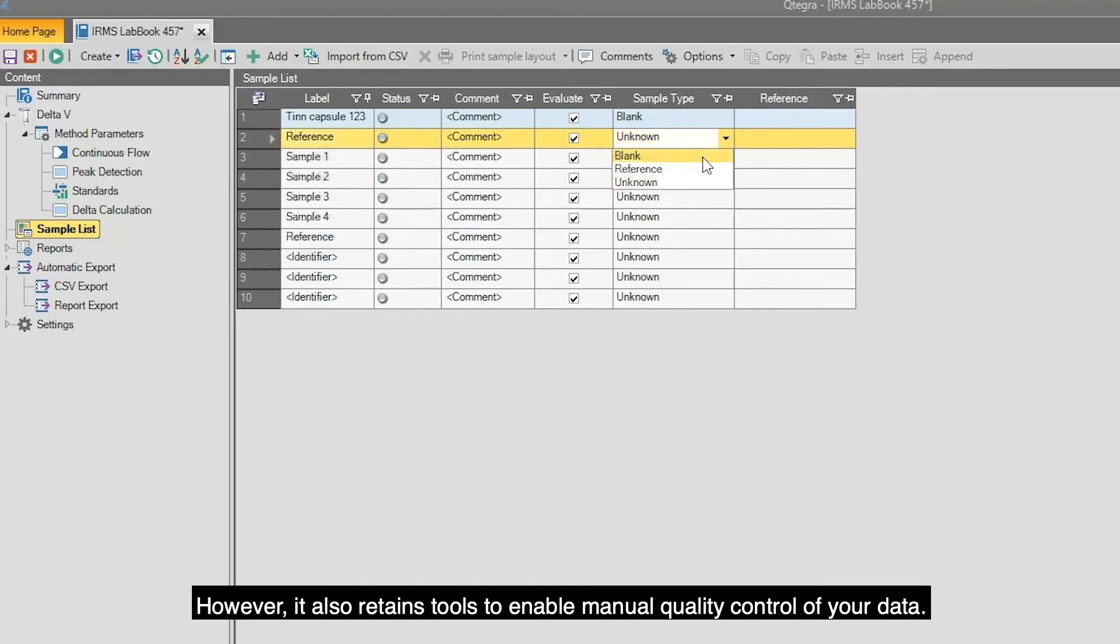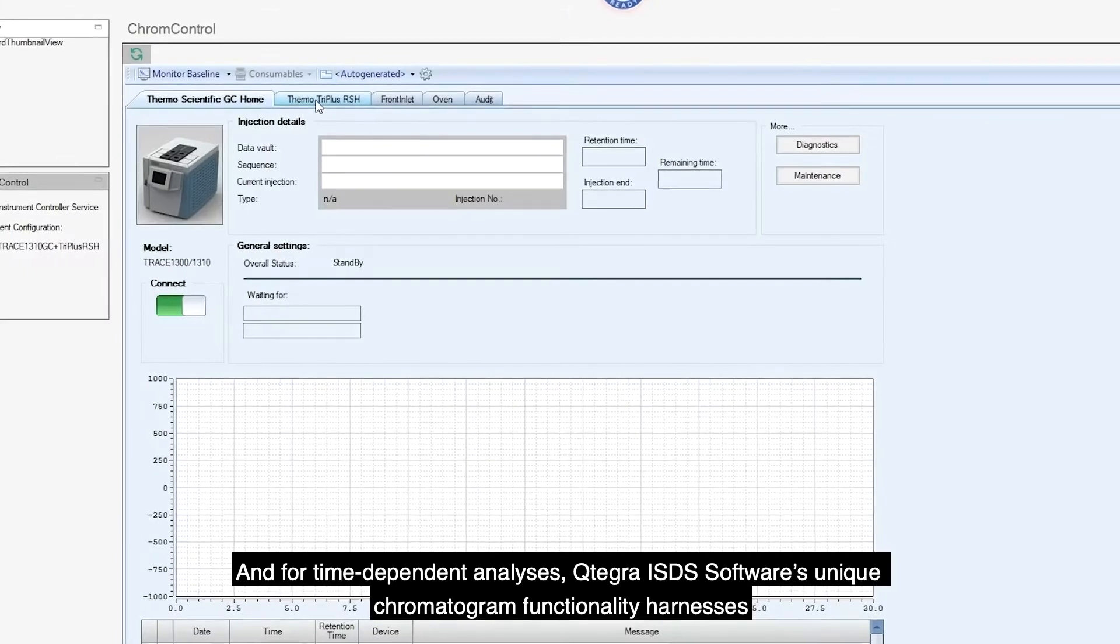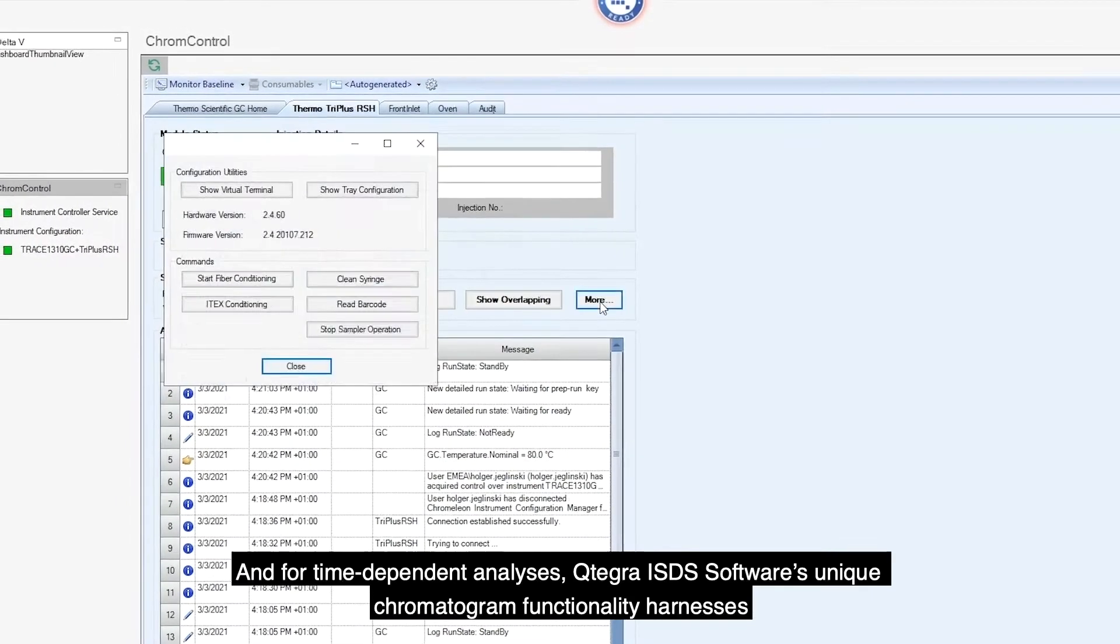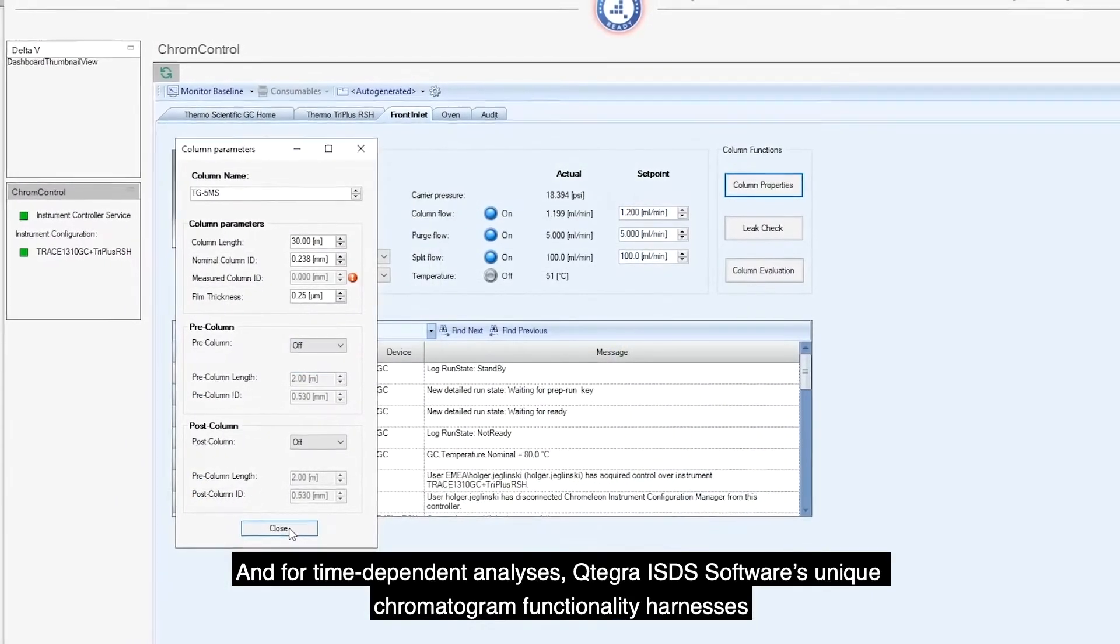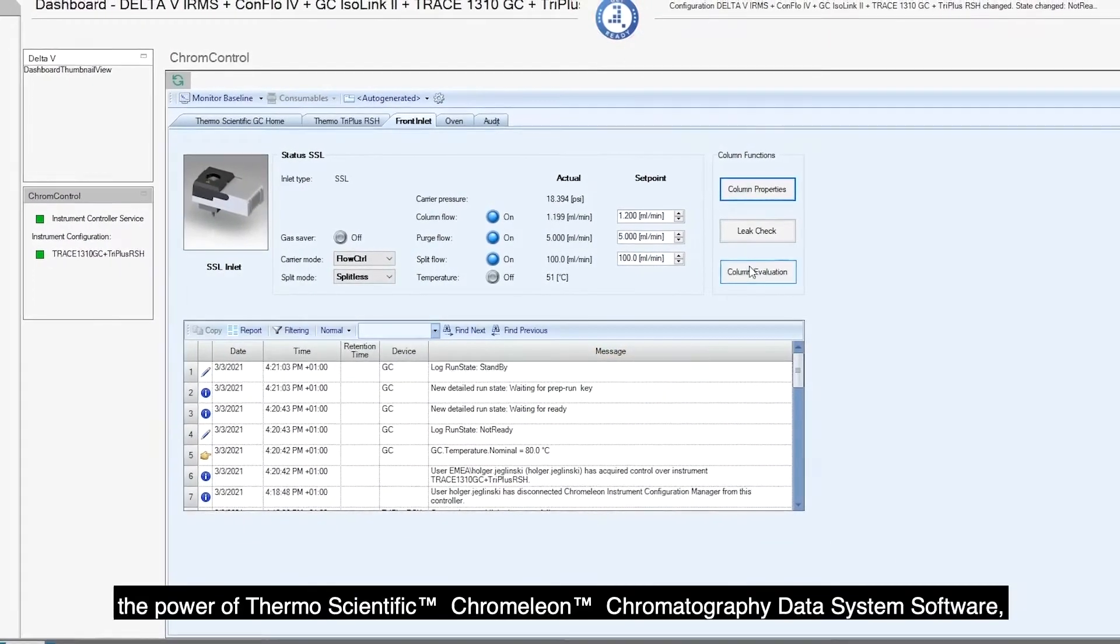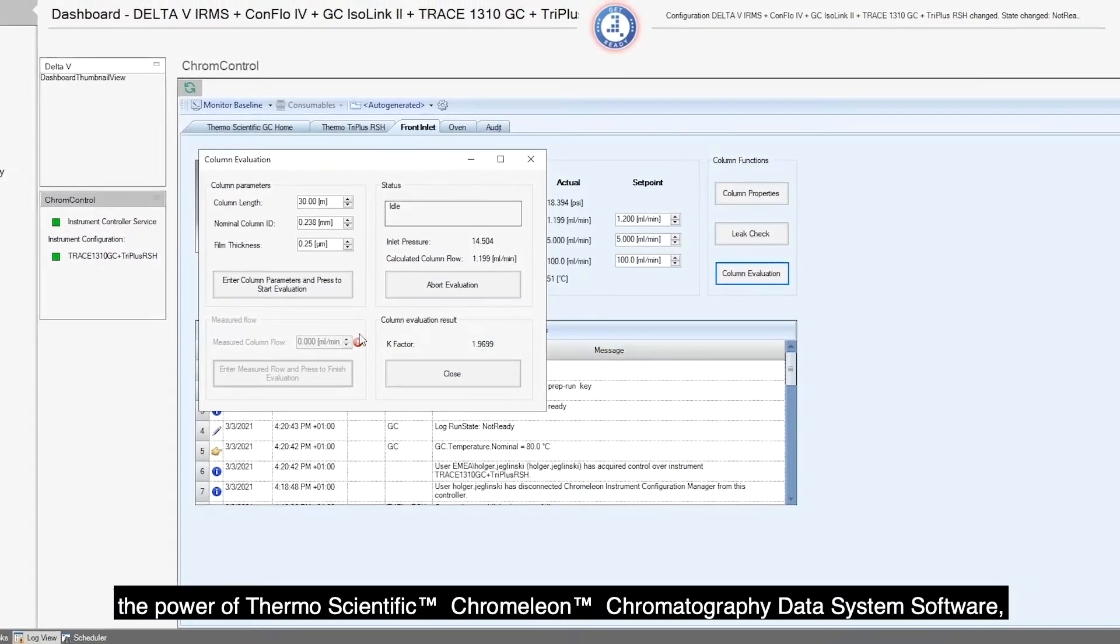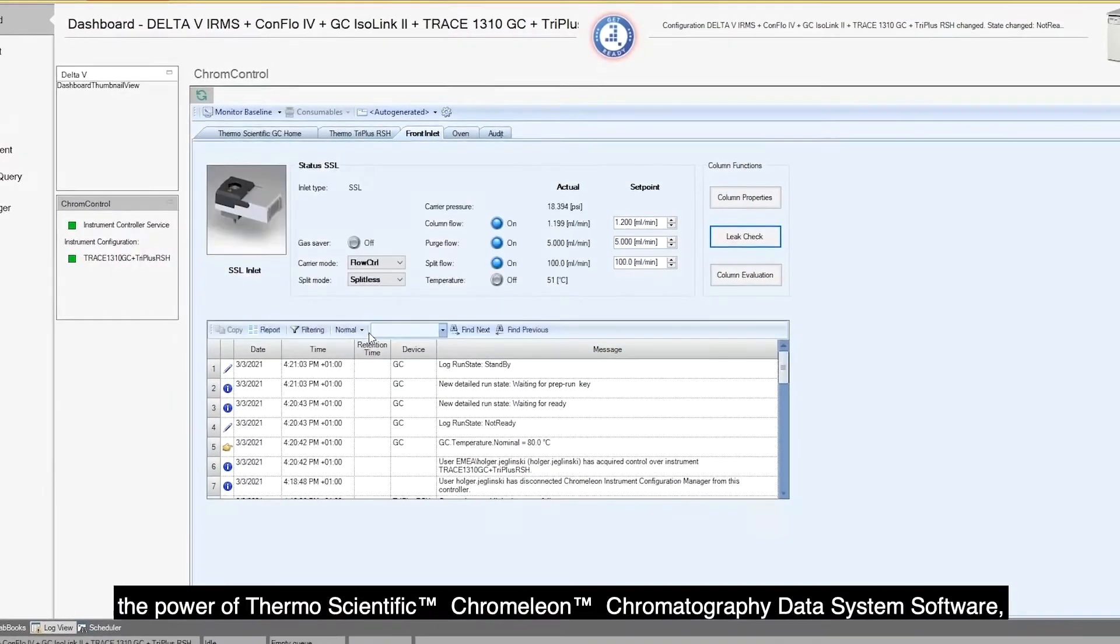However, it also retains tools to enable manual quality control of your data. And for time-dependent analysis, Qtegra ISDS Software's unique chromatogram functionality harnesses the power of Thermo Scientific Chromeleon Chromatography Data System Software, providing all you need for your research in one place.